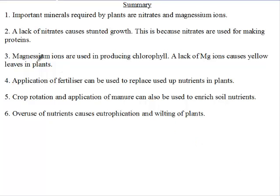In summary, important minerals required by plants are nitrates and magnesium ions. Although there are other minerals, these are the most important ones. Nitrates are used in the production of amino acids, so a lack of nitrates will cause stunted growth.